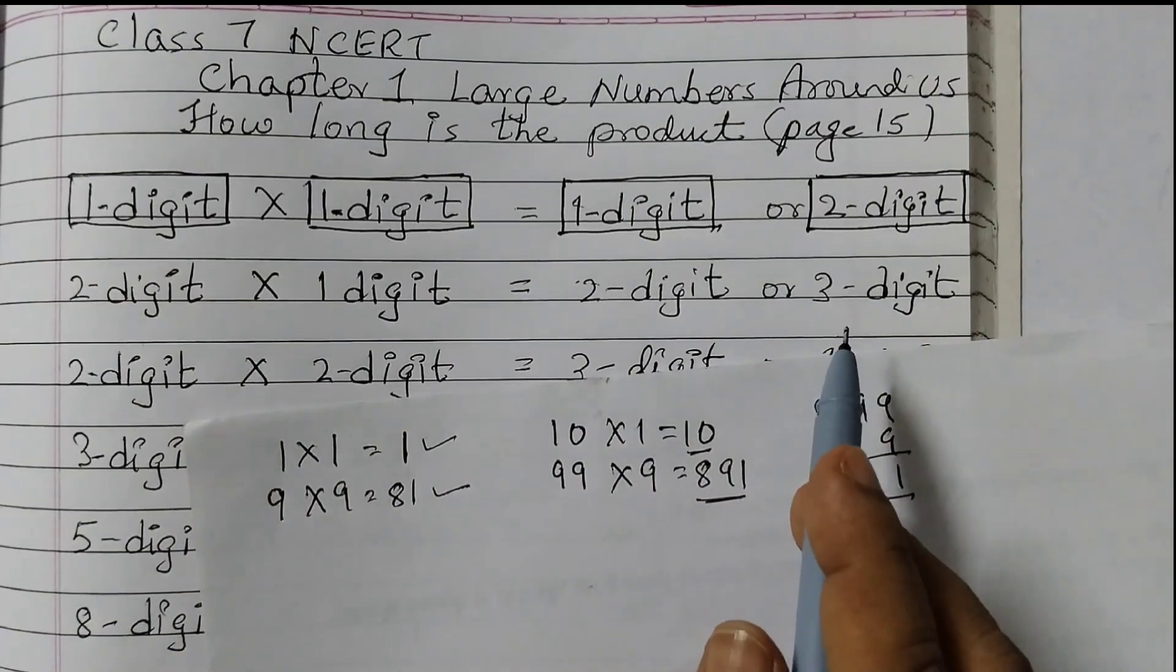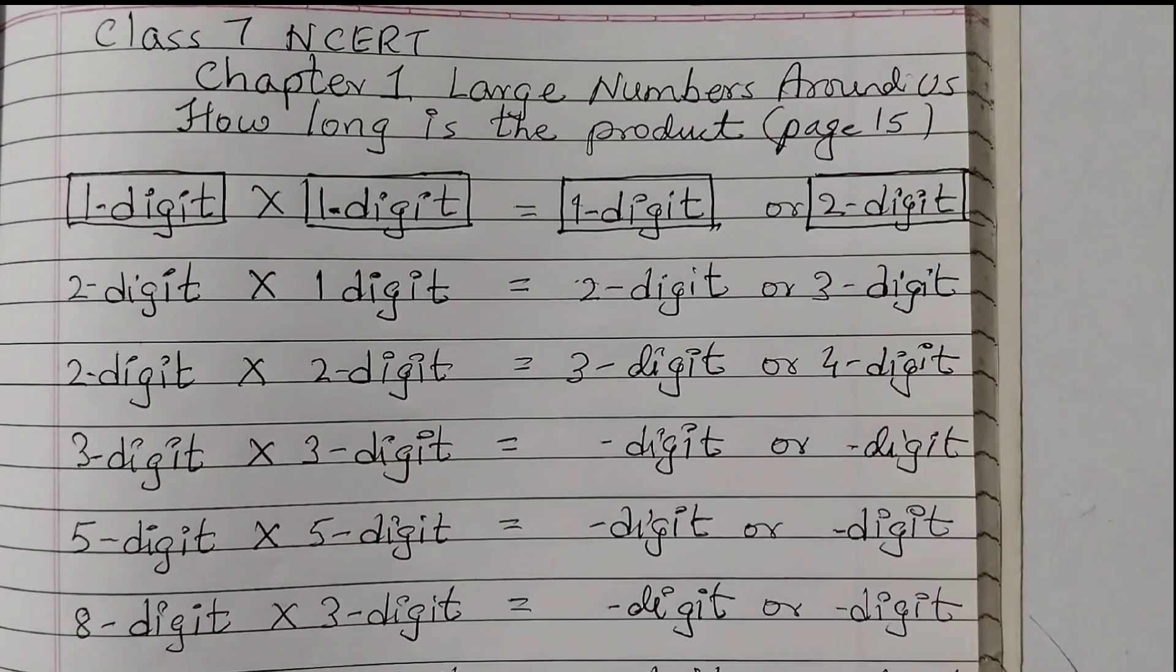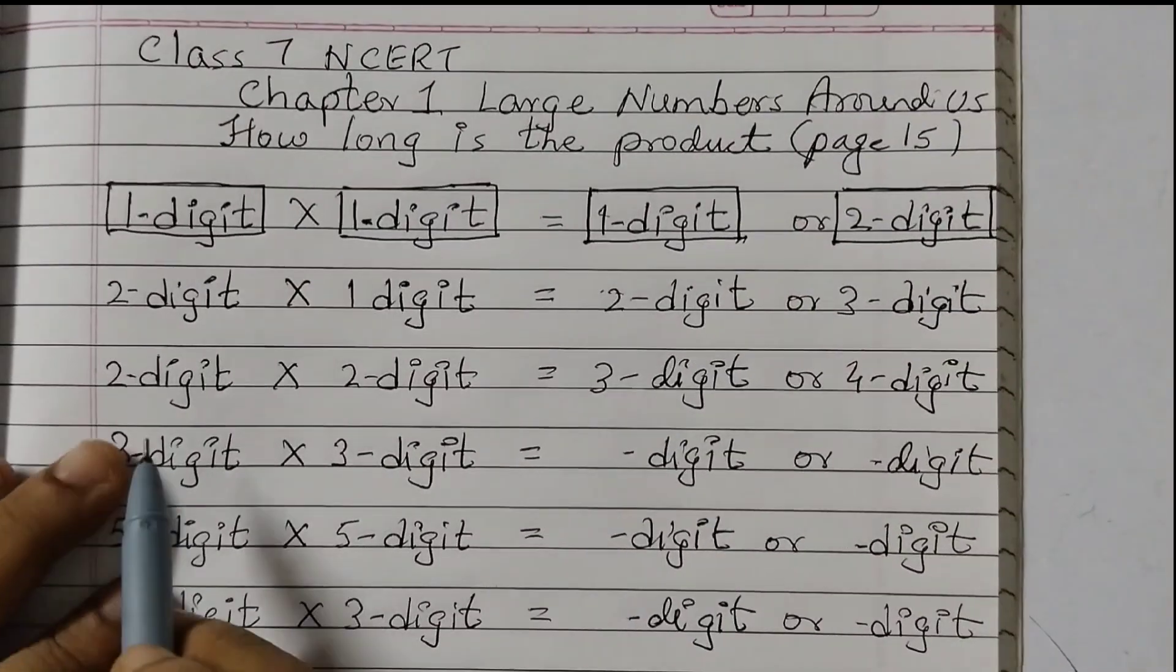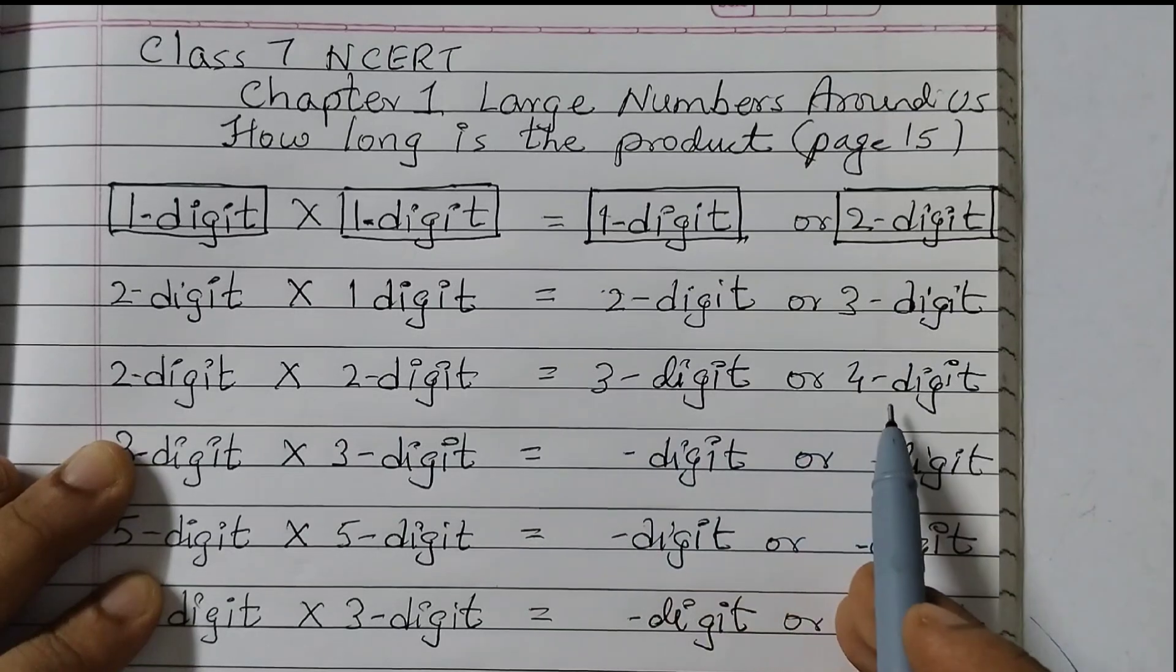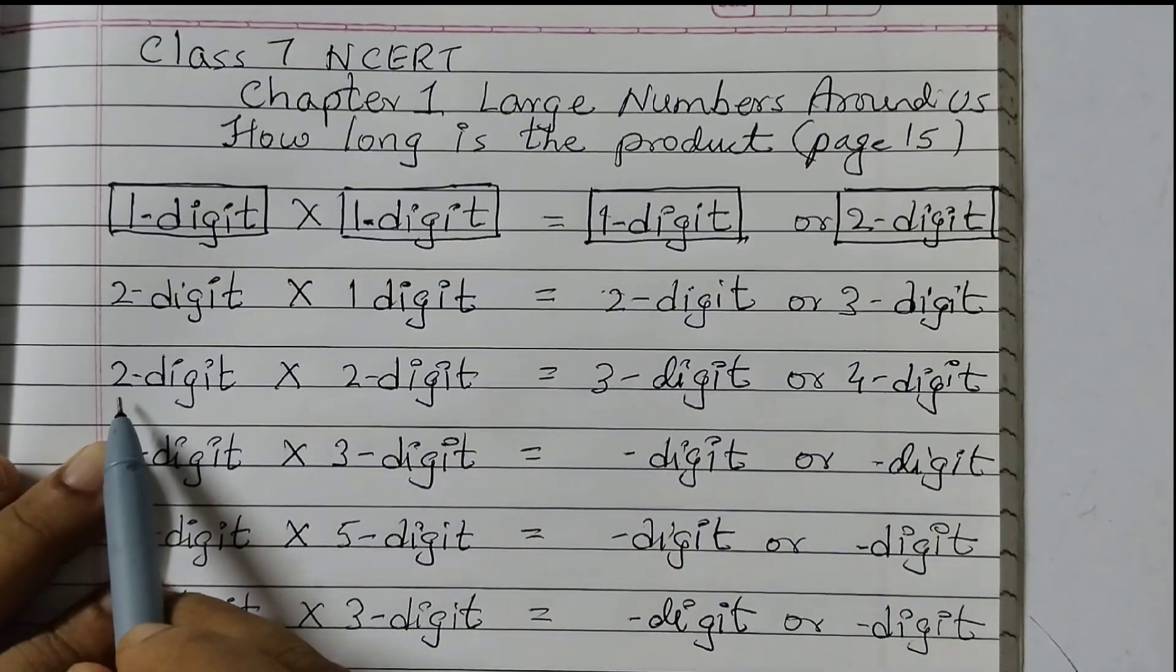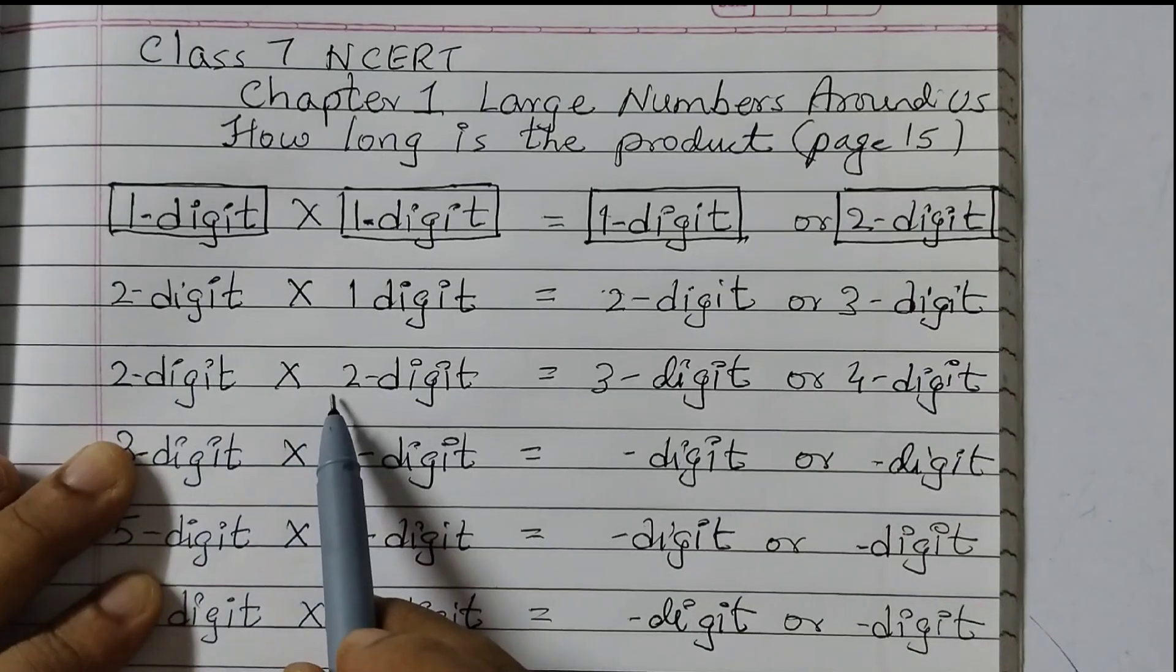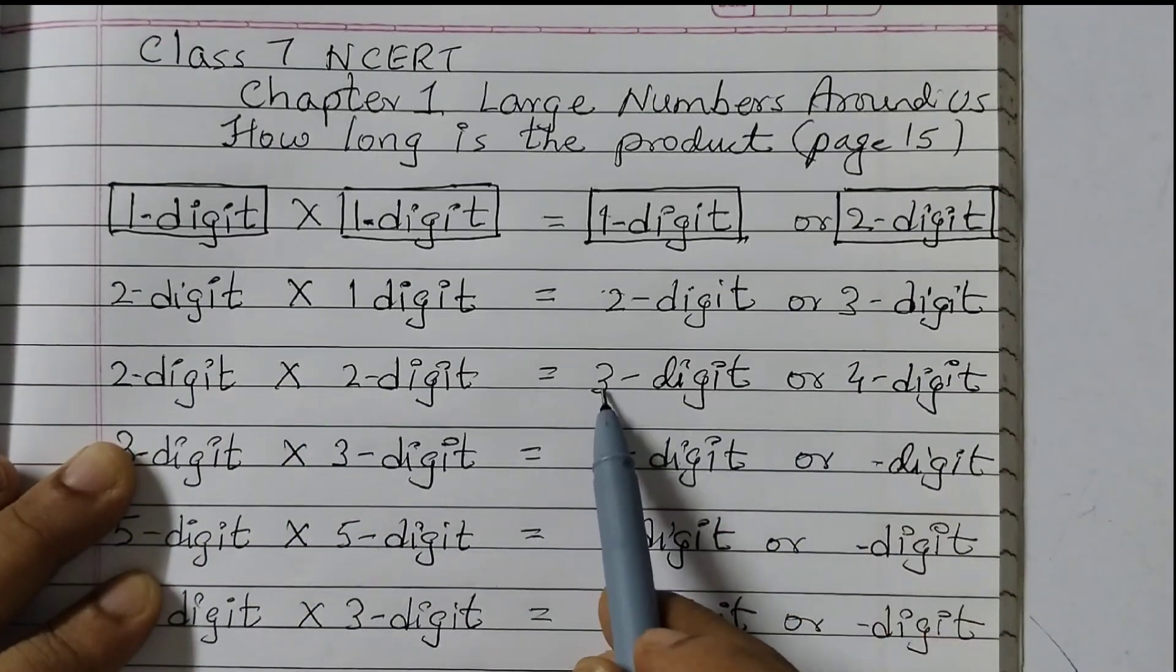But then we don't have to multiply all this. We can follow a pattern. Let us check the pattern. 2 digit into 2 digit gives 3 digit or 4 digit. So what is the pattern here? You need to add these 2 numbers. 2 plus 2, 4. So you will write 4 here. 4 minus 1, 3.